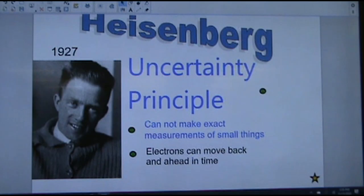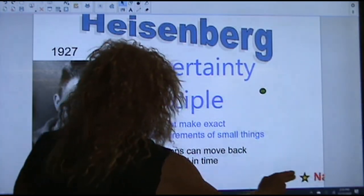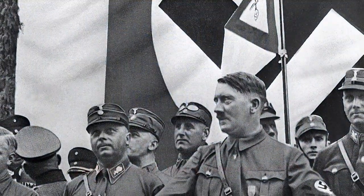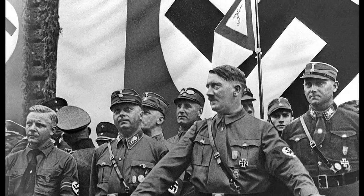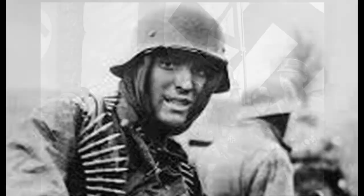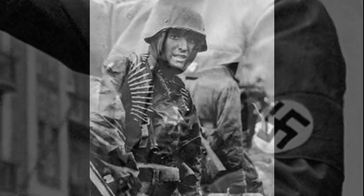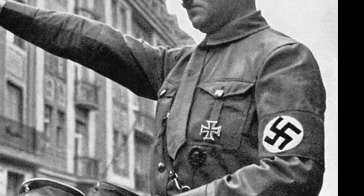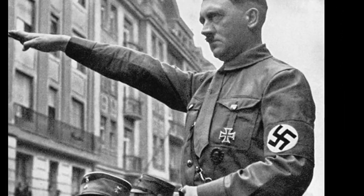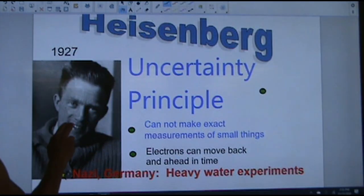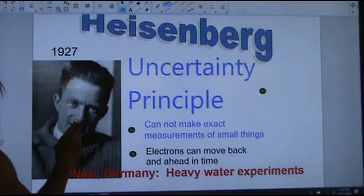Werner Heisenberg also happened to be the director of Adolf Hitler's heavy water experiments to develop an atomic bomb. So there was a period of time when he was a very feared man because he could have allowed the Germans to win World War II. So he has kind of a sinister look — maybe we should give him a mustache.